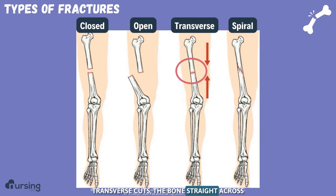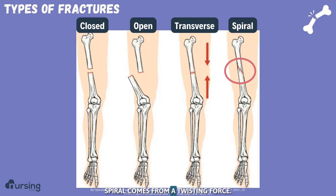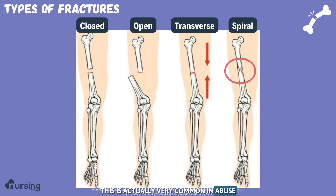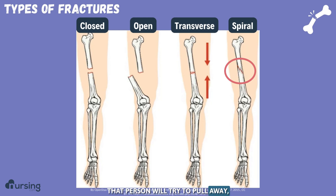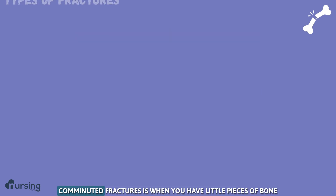A transverse fracture cuts the bone straight across. A spiral fracture comes from a twisting force. This is actually very common in abuse, where someone will grab someone's arm, that person will try to pull away, and you'll have this twisting force that causes spiral fractures.